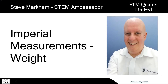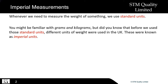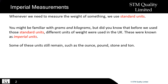Welcome to Imperial Measurements Weight. Whenever we need to measure the weight of something, we use standard units. You might be familiar with grams and kilograms, but did you know that before we used those standard units, different units of weight were used in the UK? These were known as imperial units. Some of these units still remain, such as the ounce, pound, stone and ton. So let's look at some of those imperial units.